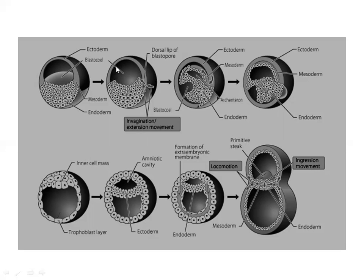The space provided by the blastocoel is now no longer present due to the entry of cells. The archenteron is forming. If you start with a single layer of cells, you can now see three layers forming.